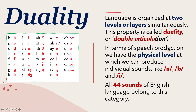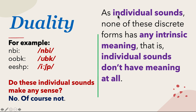In terms of speech production, we have the physical level at which we can produce individual sounds like 'na', 'ba', and 'e'. All 44 sounds of the English language belong to this category. As individual sounds, none of these discrete forms has any intrinsic meaning — individual sounds don't have meaning at all. For example, the individual sounds 'na', 'ba', and 'e', or 'o', 'ba', and 'ka', or 'e', 'sha', 'pa' — none of these have any meaning on their own.